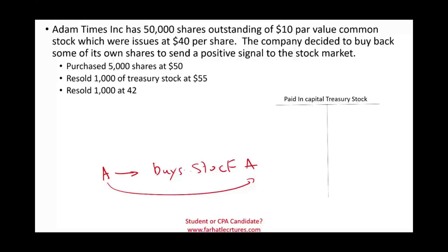Let's look at an example to illustrate treasury stock. Adam Times Inc has 50,000 shares outstanding with a $10 par value common stock, issued for $40 per share. So at some point in the past, Adams Times Inc issued 50,000 shares and received $40 per share — total cash received was $2 million. We credit common stock for 50,000 shares times the $10 par value, which is $500,000, and the remainder of $1.5 million goes to paid-in capital. This was the original entry.